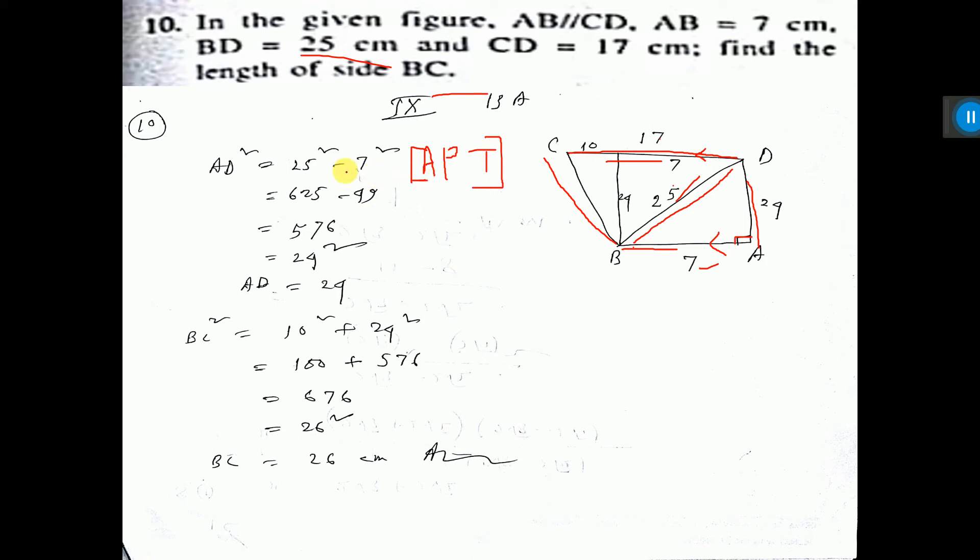We are getting this value of AD. So this one is 25, means this one also will be 25 because I have drawn perpendicular here.